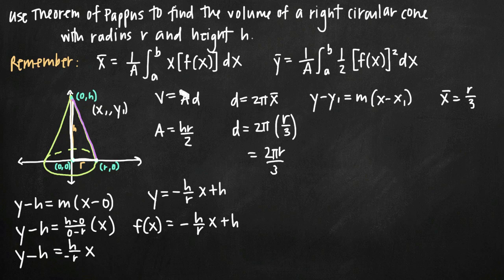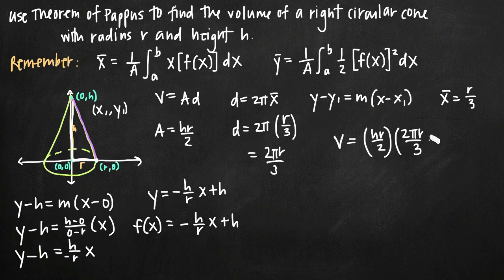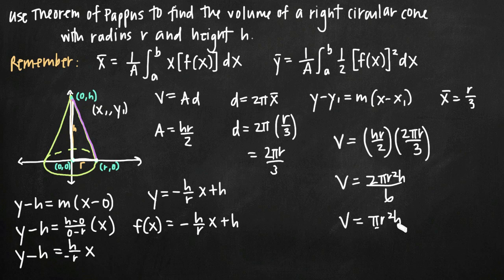Coming back to the volume formula, we just need area and distance, and we now have both. Volume equals area times distance, so volume = (hr/2) × (2πr/3) = 2πr²h/6. Reducing the fraction gives us πr²h/3, which is indeed the volume of the cone — found by multiplying the area of the triangle by the distance traveled by the centroid of the plane region.